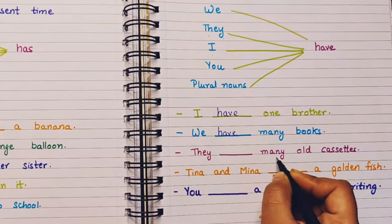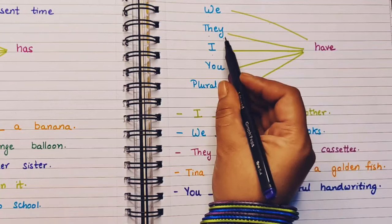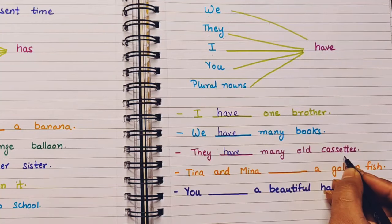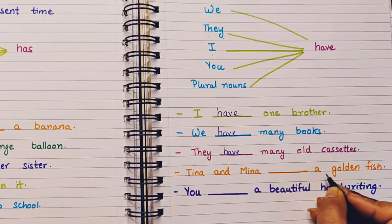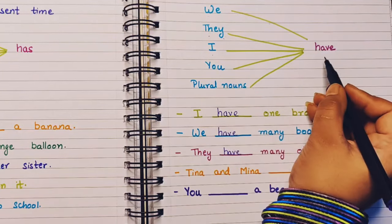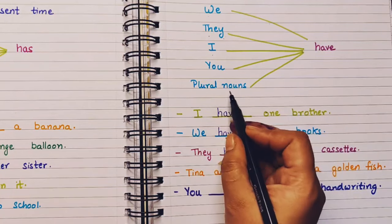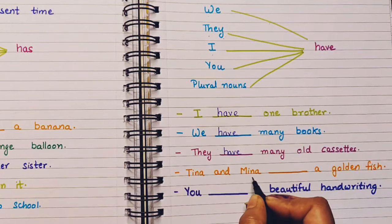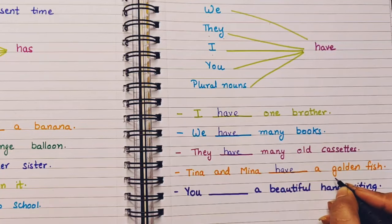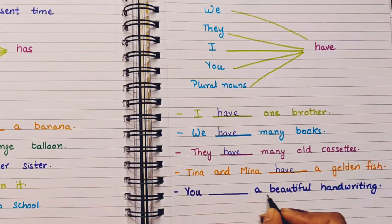Next: they — dash — many old cassettes. With they, have comes. So: they have many old cassettes. Now Tina and Mina — dash — a golden fish. We know that with plural nouns we always use have. Tina and Mina are plural nouns, so: Tina and Mina have a golden fish. With plural nouns also we get have.